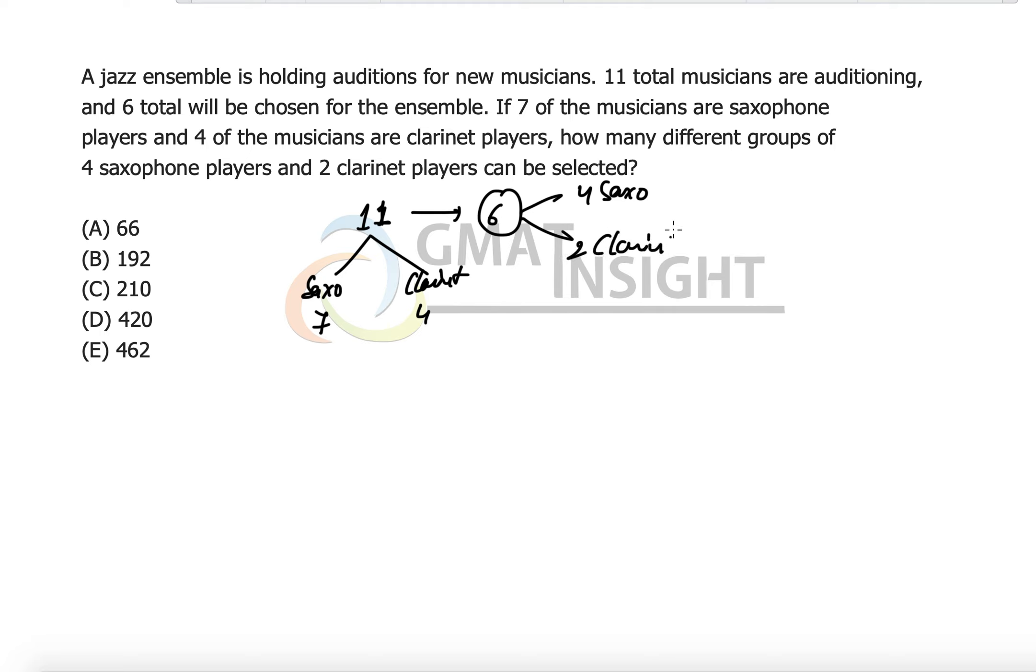It is quite simple: out of seven saxophone players we need four, and out of four clarinet players we need two. So it's a clear selection question. Out of seven we need to select four, and out of four we need to select two.